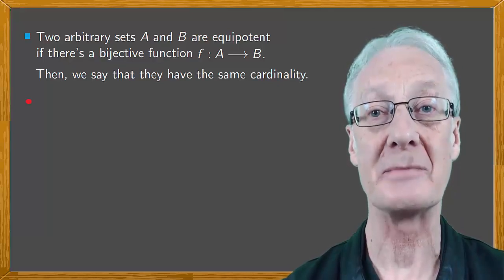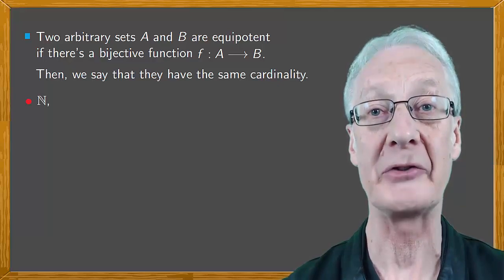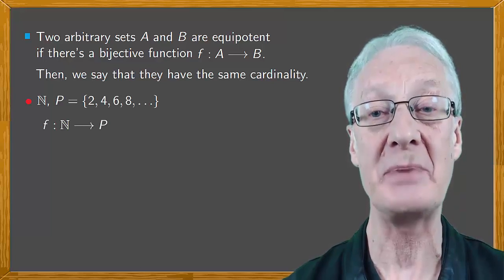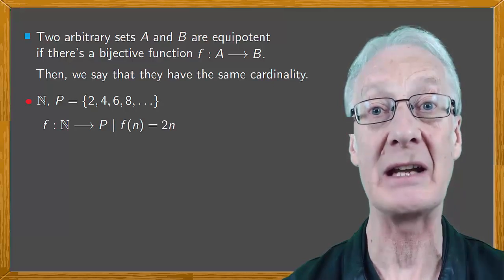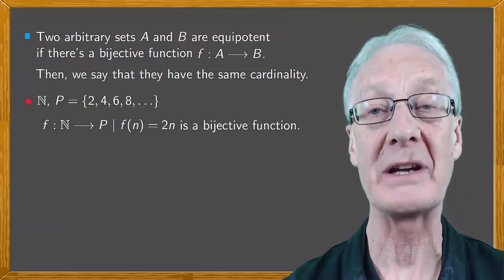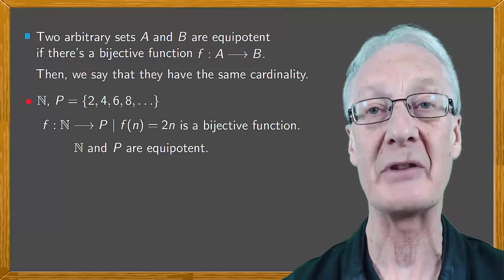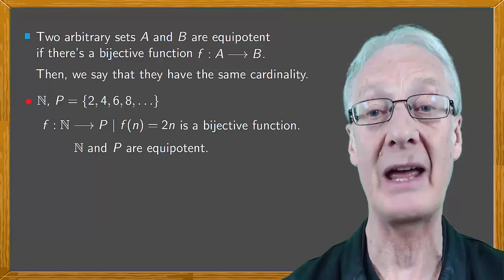Consider the set of natural numbers N and the set of even positive numbers P. It's immediately clear that there's a function F from N to P, which is bijective. It's simply F of N equals 2N. Therefore, we can say that both sets are equipotent, have the same cardinality, and have the same number of elements.